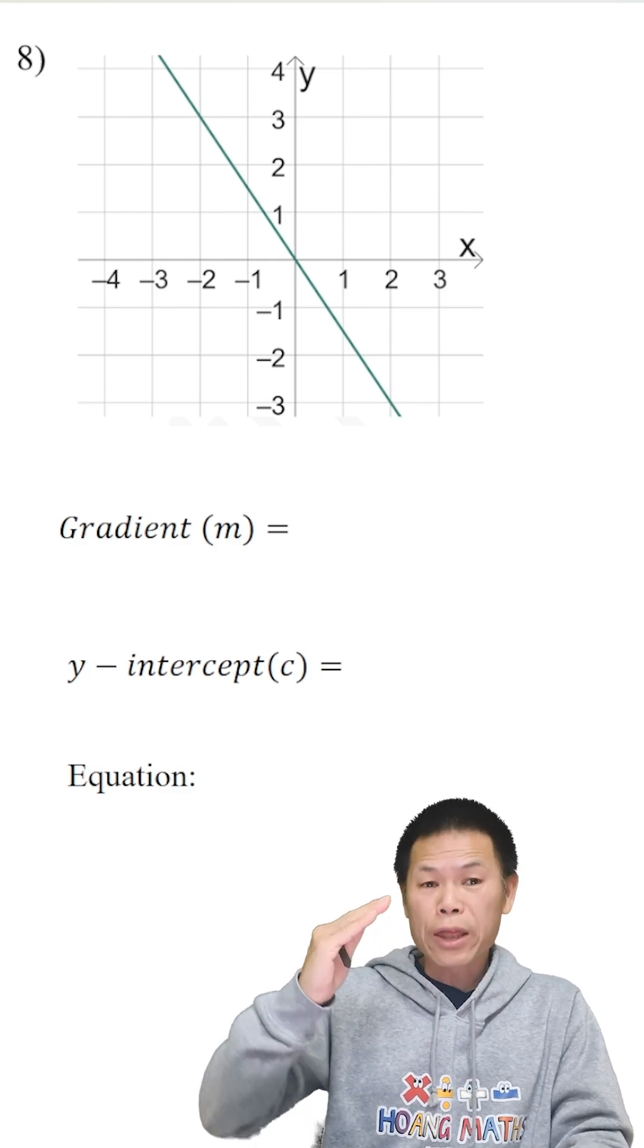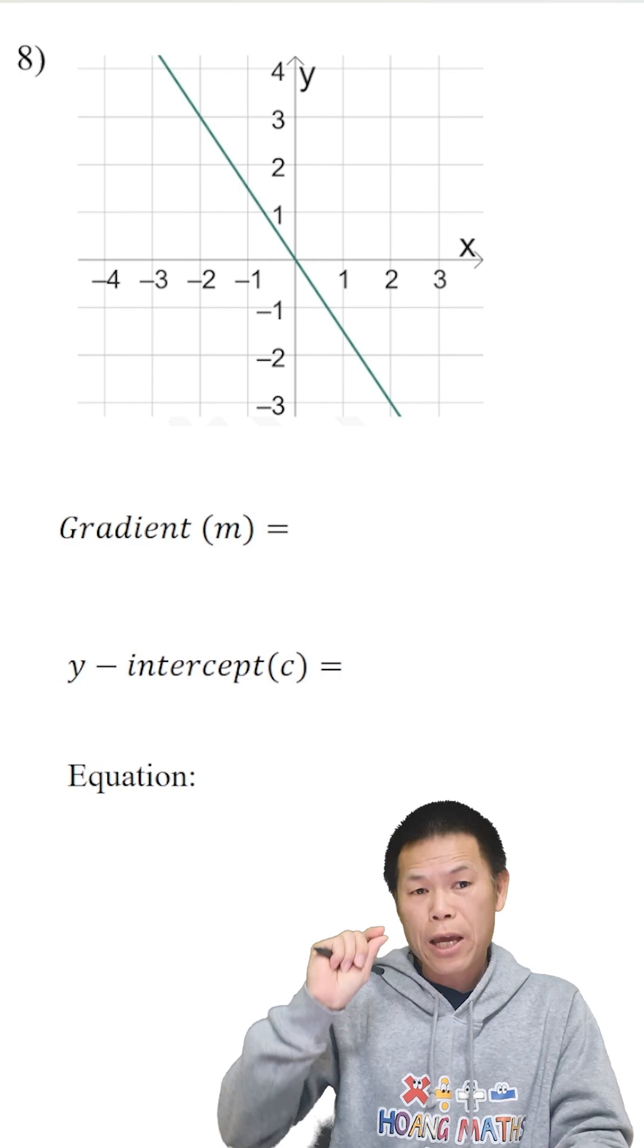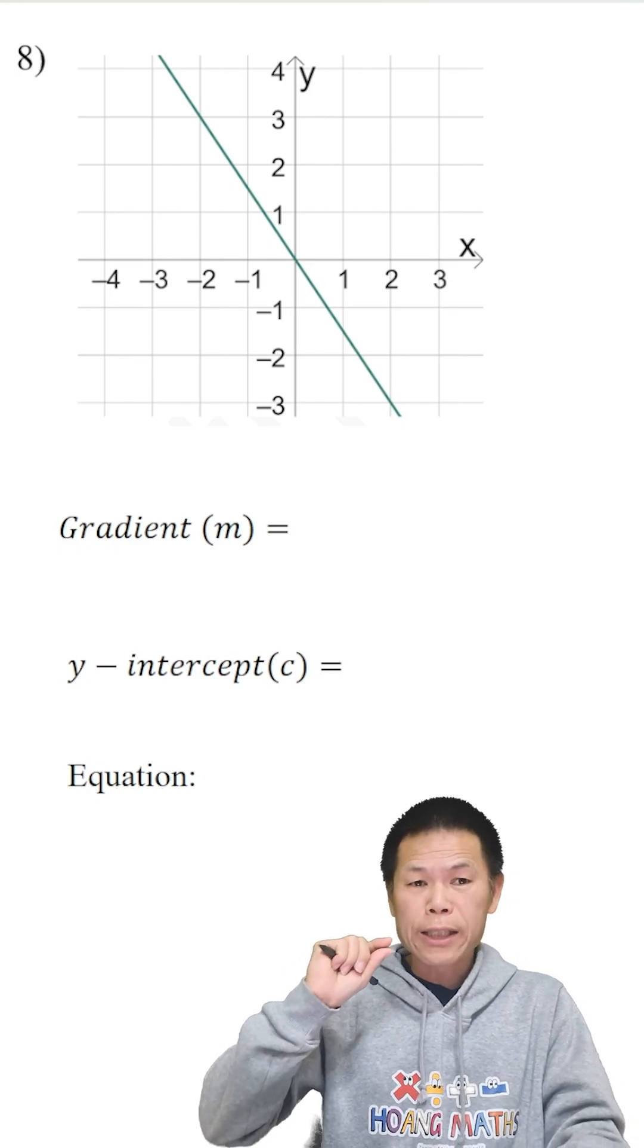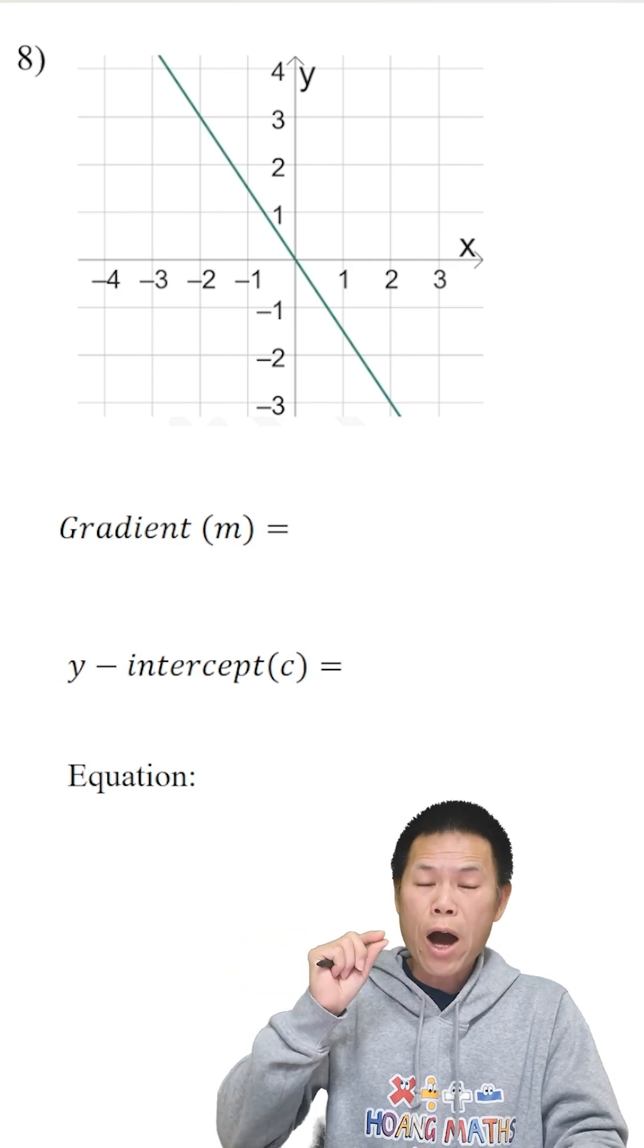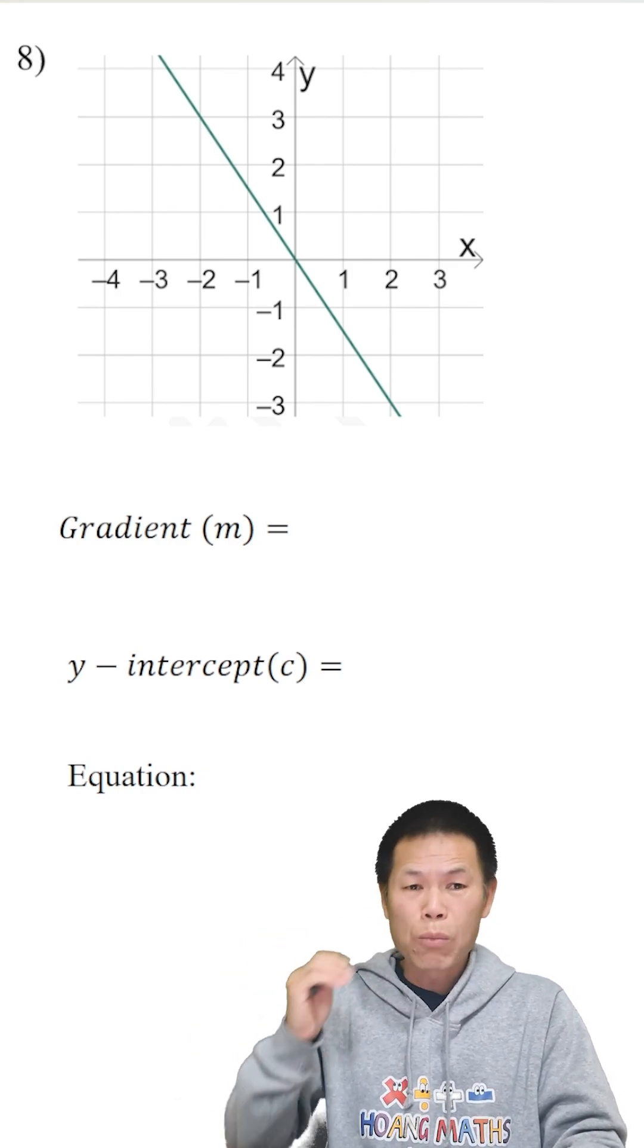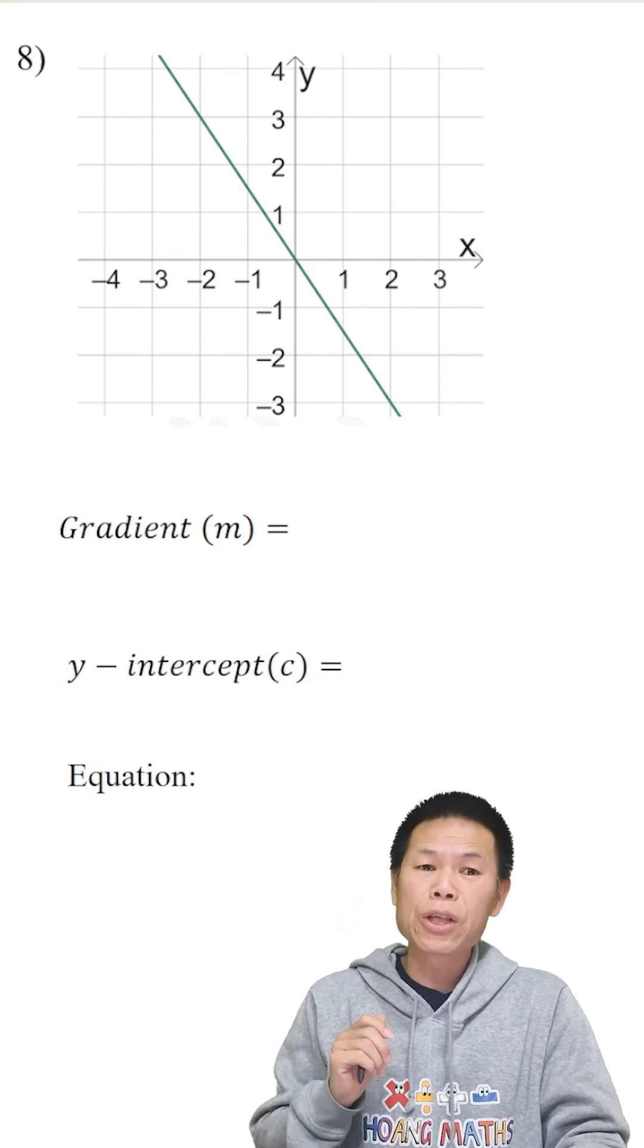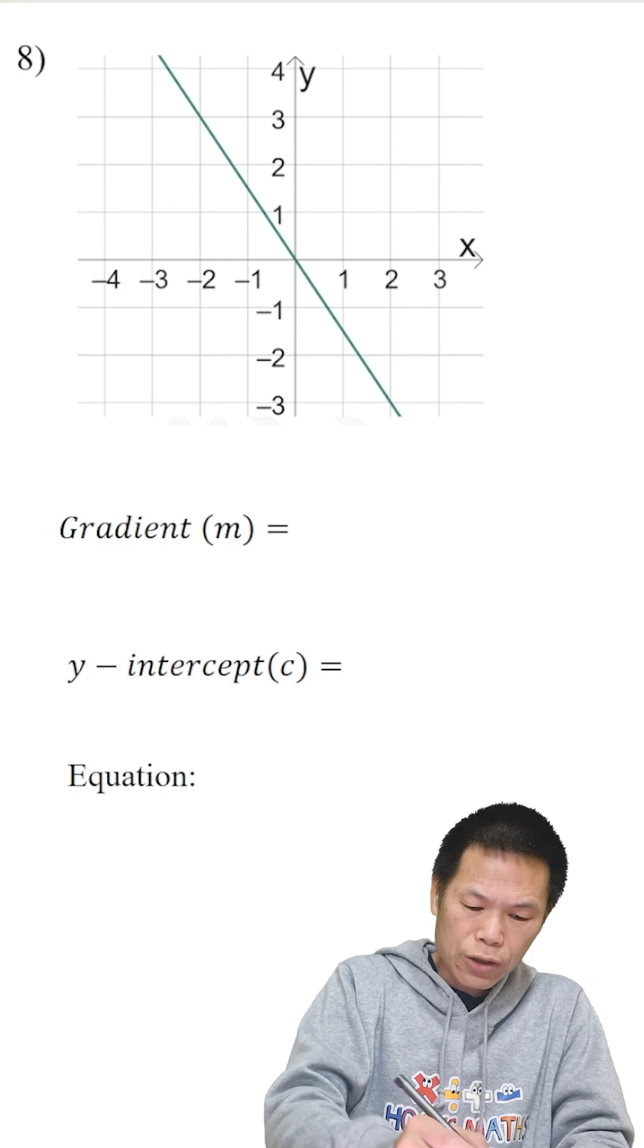Again, we know that the gradient is going like this, so therefore it is negative. Otherwise, you can identify the sign of the gradient by looking at when x is increased, y is decreased. When x gets larger, y gets smaller, so they're heading in opposite directions. Therefore, we know the gradient is negative.